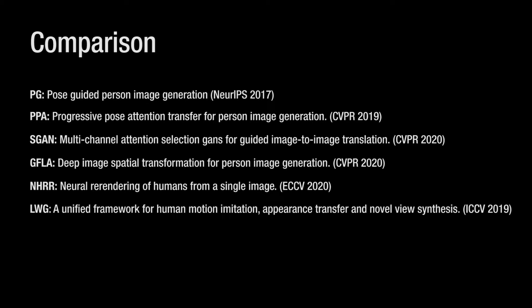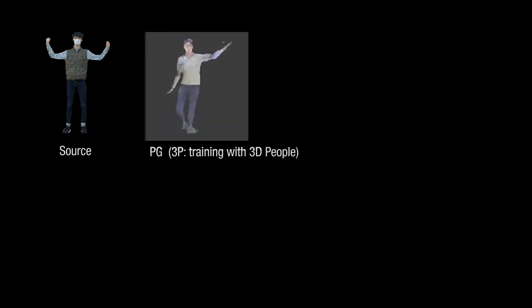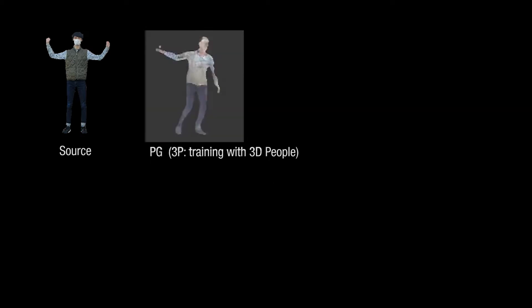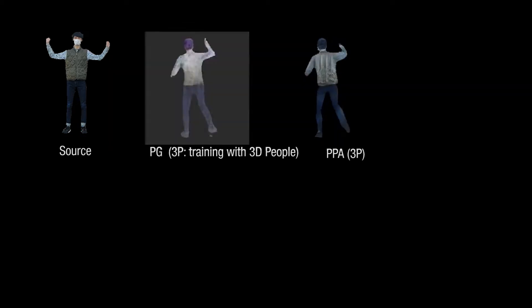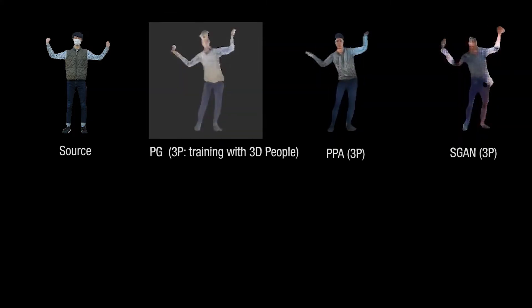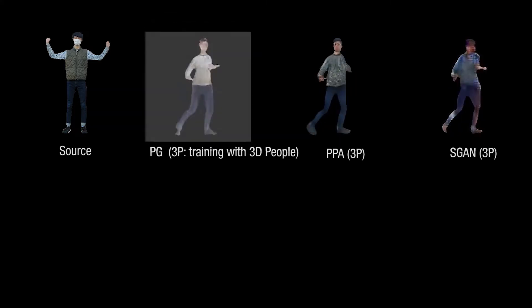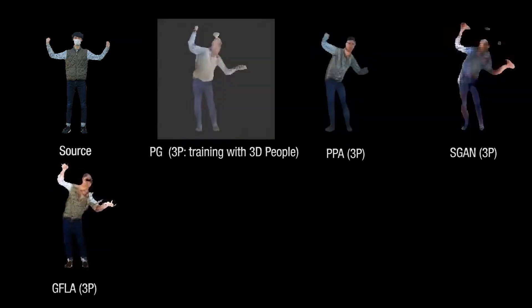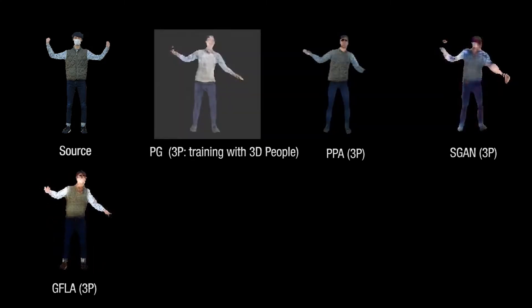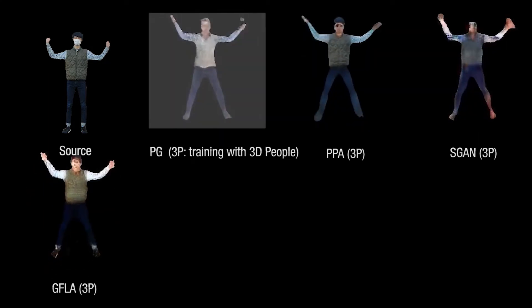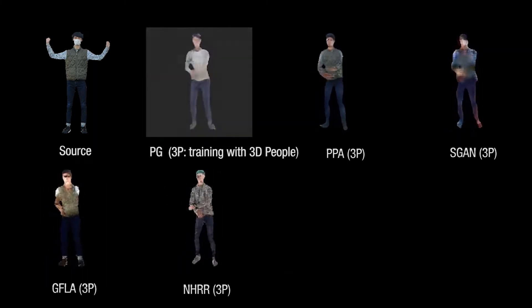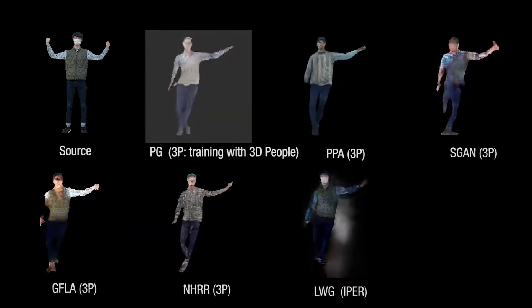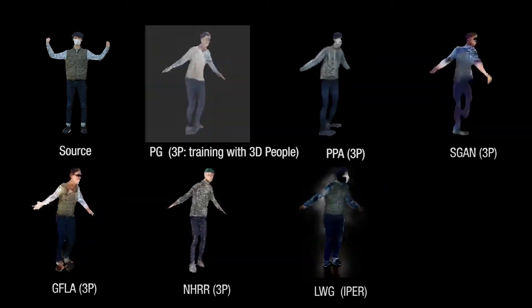We compare our method to six recent works. PGE generates a person image in a coarse-to-fine manner, using the 3D People dataset to train the model. PPA refines the person image with pose attentional blocks. SCAN selectively combines multichannel attention maps to enhance coarse generation. GFLA spatially transforms features from the source image to align with the target pose. NHRR employs a large high-dimensional UV feature map to decode the person's appearance. LWG propagates the source information to the target using the SMPL body model.